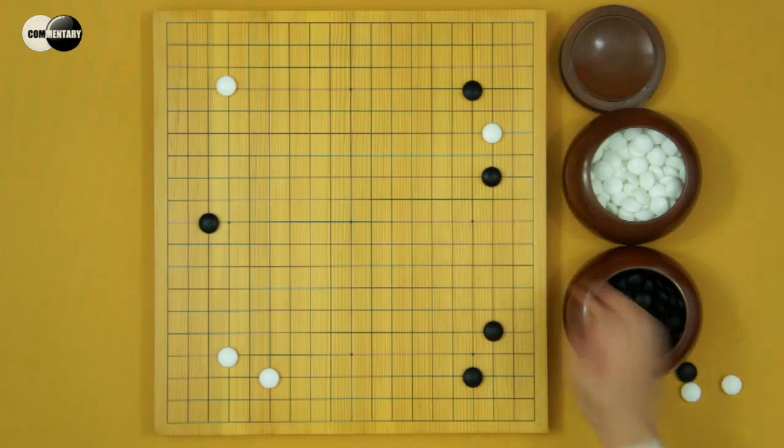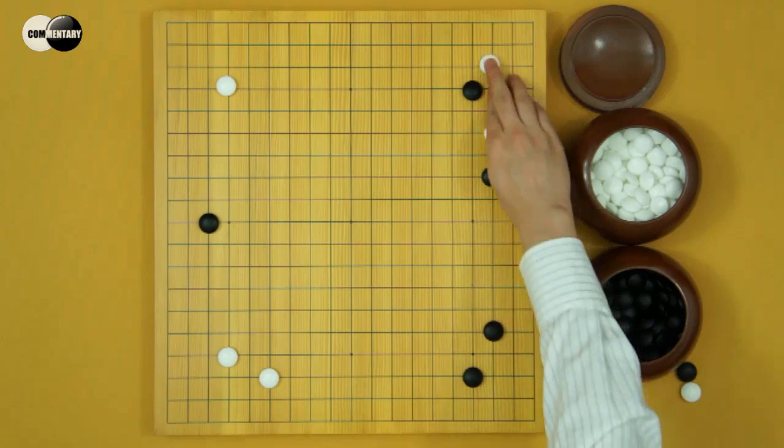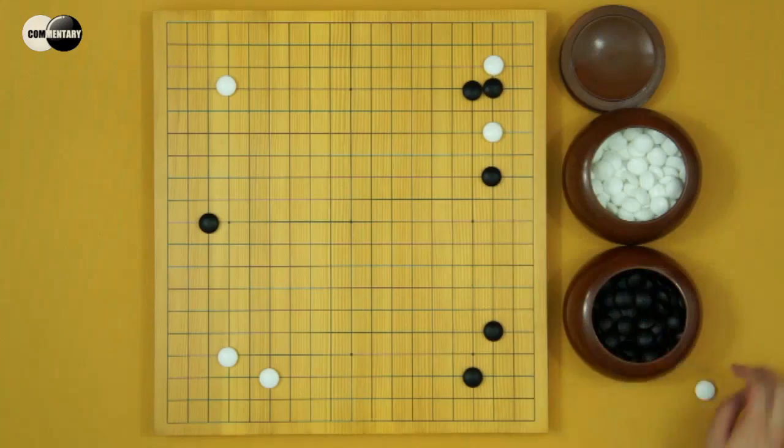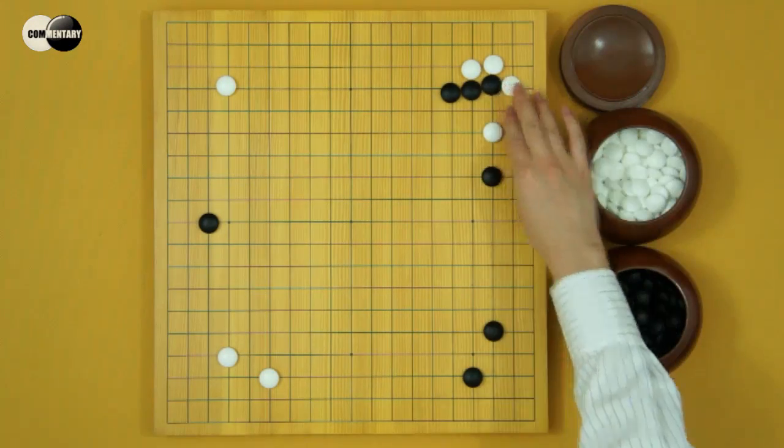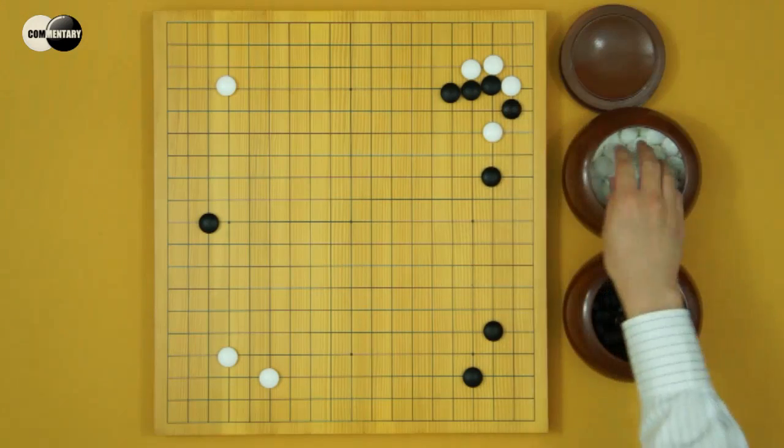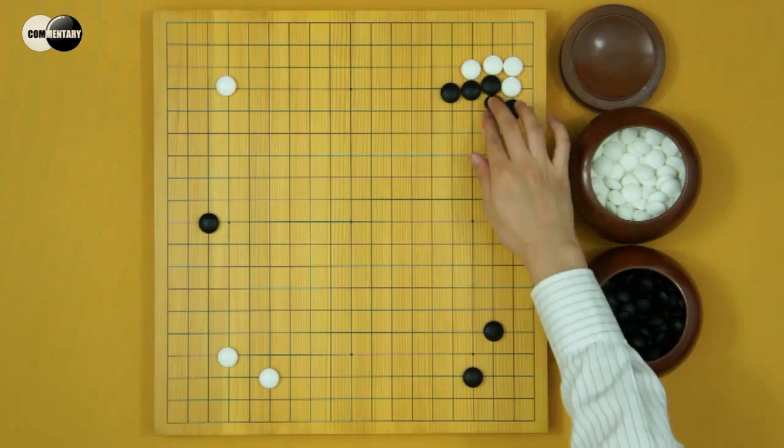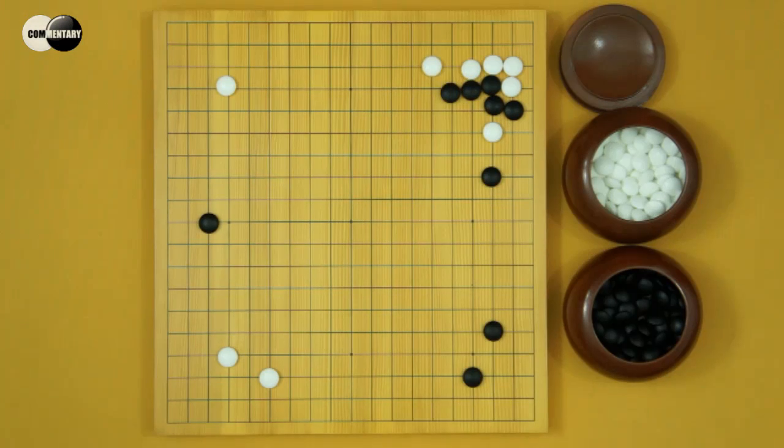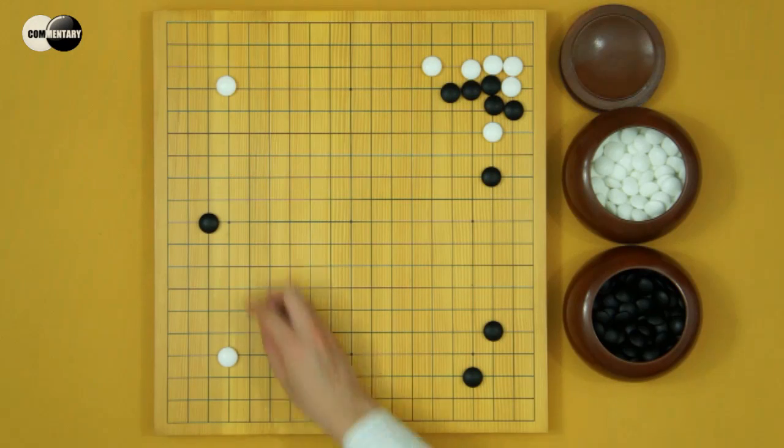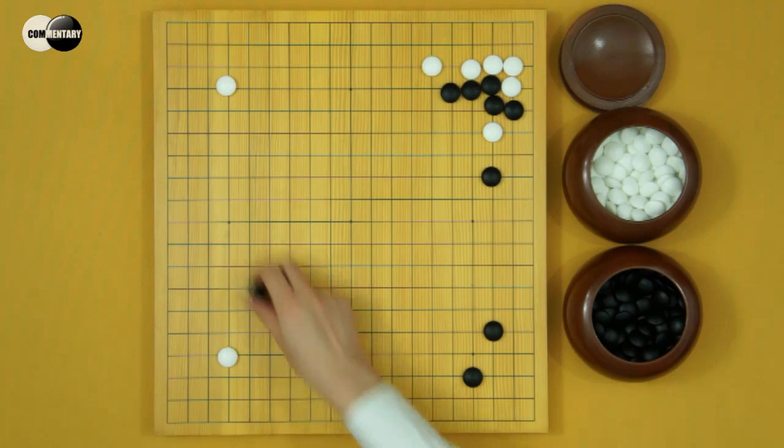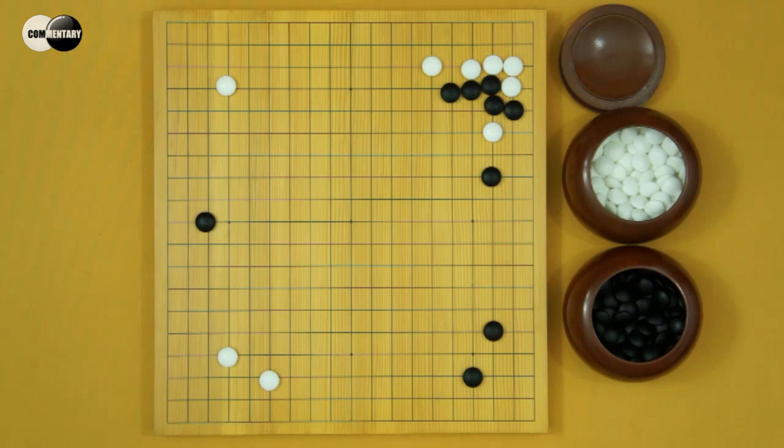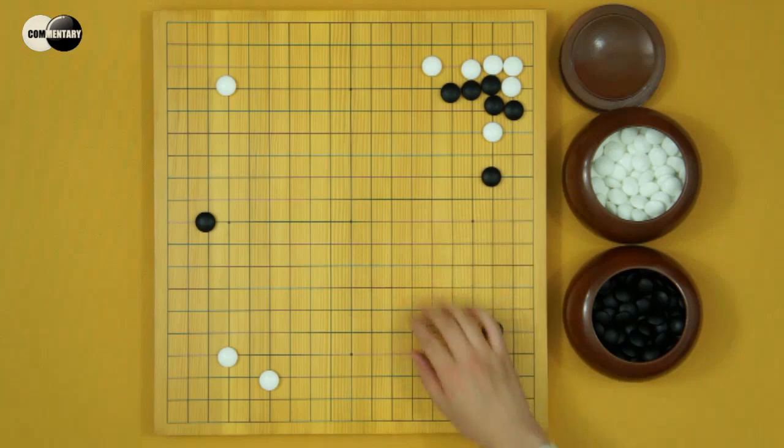But if Black pincer, White just invades sansan. It's joseki, very simple. Now you see, this exchange is bad for Black. In this situation, Black should kakari here. Because of this exchange, White's keima is very solid. Black's moyo has to be reduced.